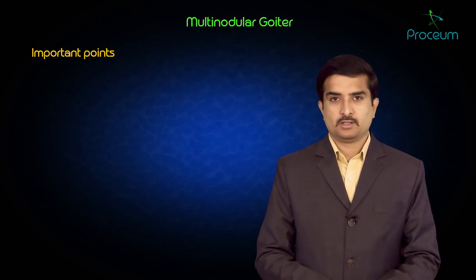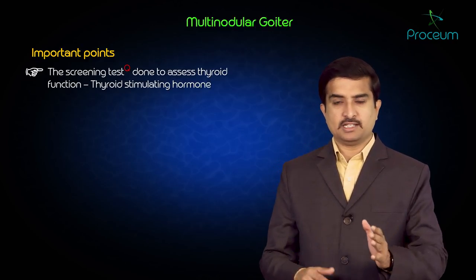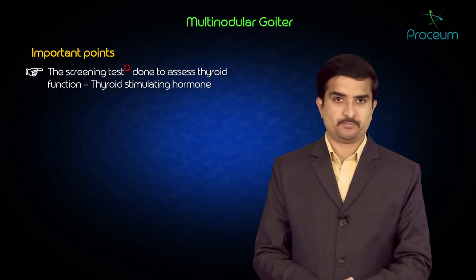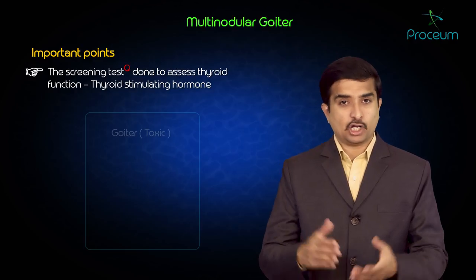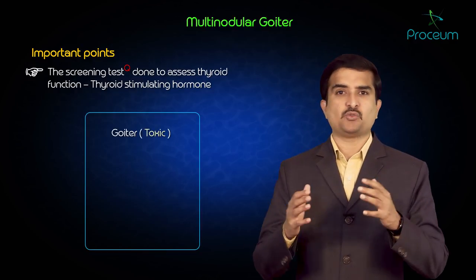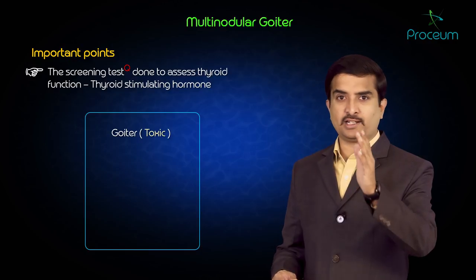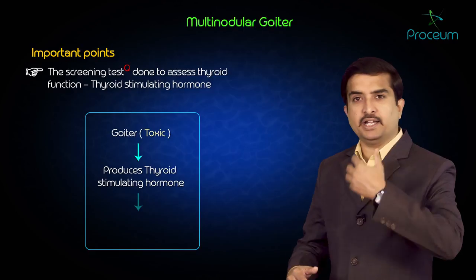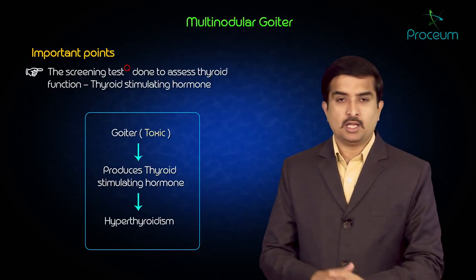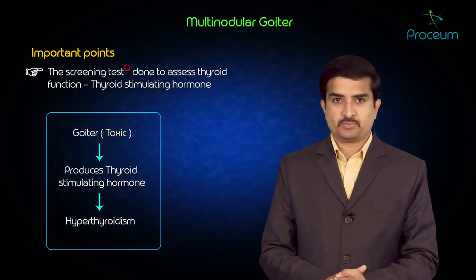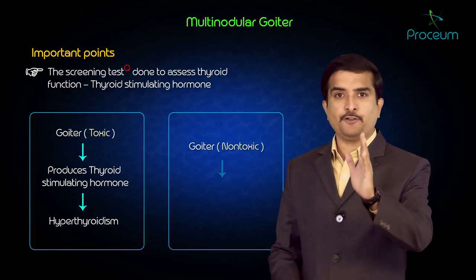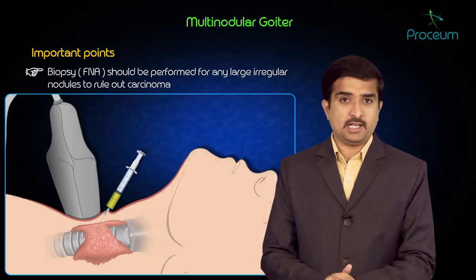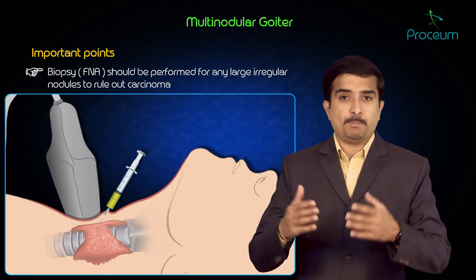Important points to consider: the screening test to assess thyroid function is the thyroid stimulating hormone (TSH). A goiter is called toxic if it produces thyroid hormone leading to hyperthyroidism, and non-toxic if it does not produce thyroid hormone. Fine needle aspiration biopsy should be performed for any large irregular nodules, especially to rule out carcinoma of the thyroid.